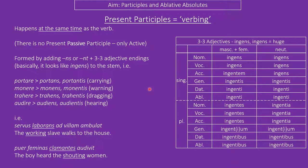The first one is the present participle. It is 'present' in the sense that it happens at the same time as the verb. You get these by adding -ns, as in portans, or -nt- with some endings, as in portantis, to the stem. The endings come from ingens, which is a third declension adjective looking very similar to rex and caput, with the exception of the ablative singular, where it stays as -i rather than the -e you'd expect. That's very common for third declension adjectives.